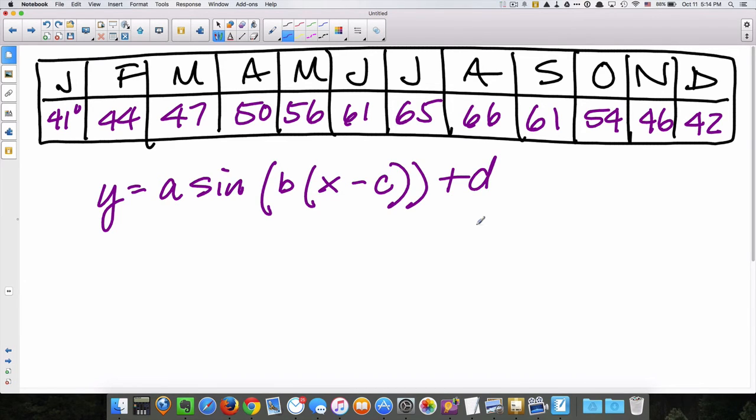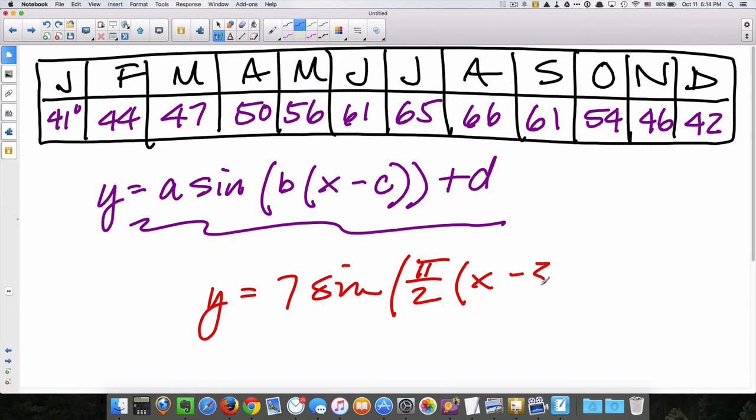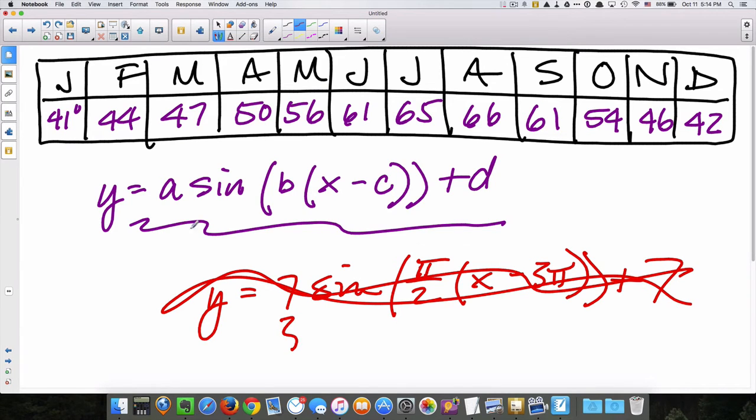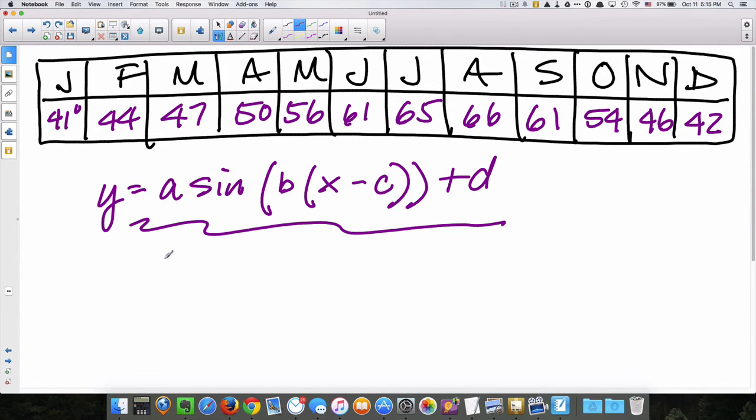Remember this is our generic form. To get a function that models this, it would have to look something like 7 sin(π/2 x - 3π) + 7. In other words, these numbers have to be filled in, the a, b, c, and d, so that we can have a functioning model. Otherwise we have an equation that has six variables and that doesn't do anyone any good. So let's get rid of all this. How do we figure out what the amplitude is?